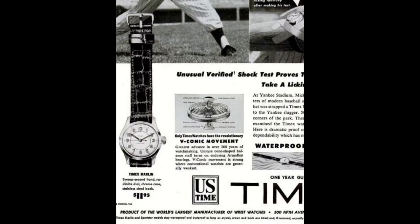For the next ad, we're going to look at a Timex ad. Specifically, we're just going to look at the V-conic movement description. Only Timex watches have the revolutionary V-conic movement. Greatest advance in over 200 years of watchmaking. Unique cone-shaped balance staff turns on enduring Arma alloy bearings. The V-conic movement is strong where conventional watches are generally weakest.